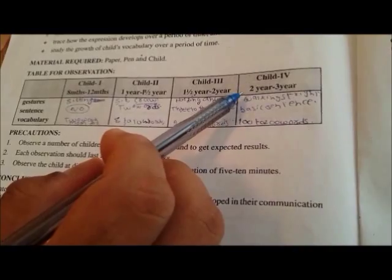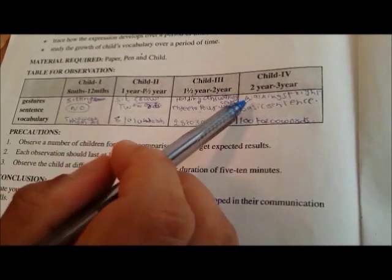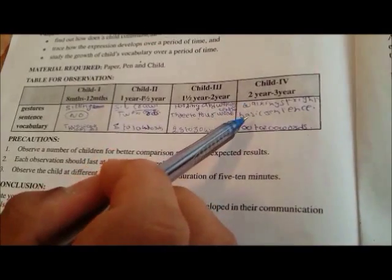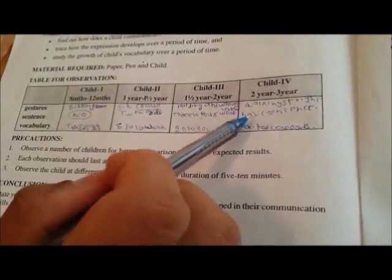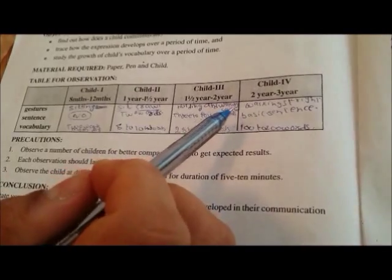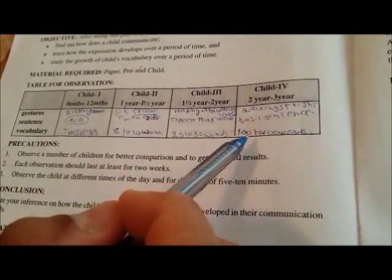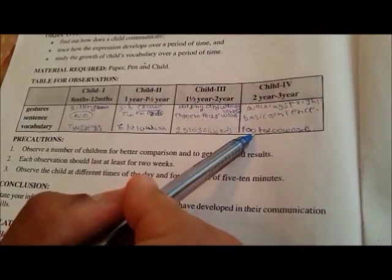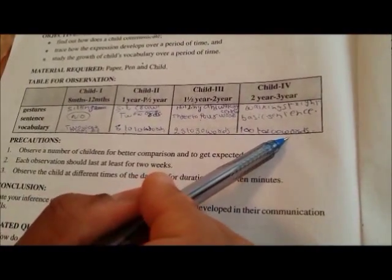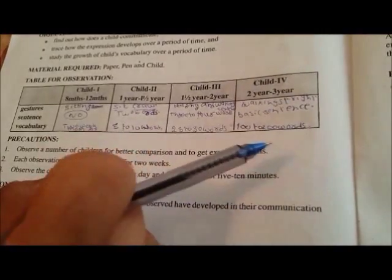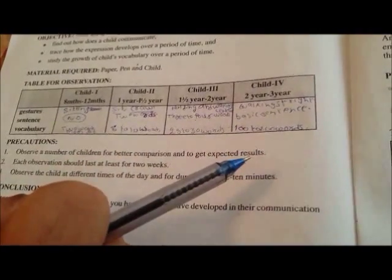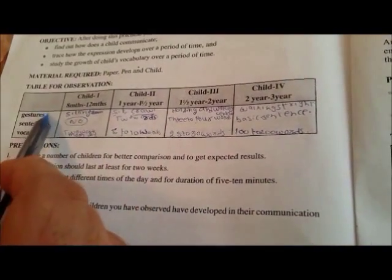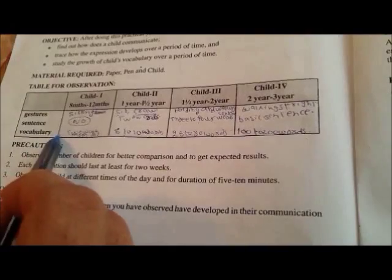Child number four, the last one, is from two to three years. A two to three year child can start walking straight, he might limp. And the sentences he tries to make basic sentences because three years old child can make basic sentences. The development depends upon the number of vocabulary as he will learn with time. And the vocabulary by this time he knows is hundred to two hundred words. After three years, a child can go to nursery where he will learn more words. These are the four types of children whose gestures, sentences, and vocabulary we have talked about.